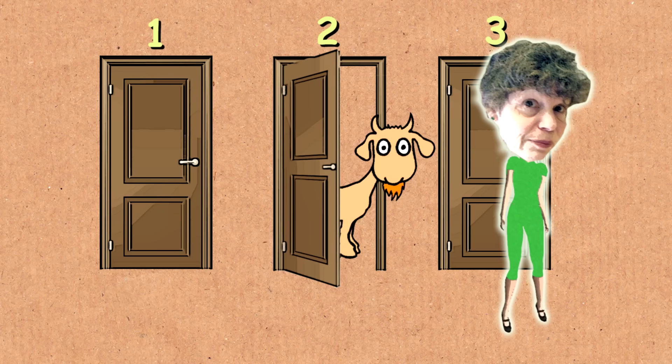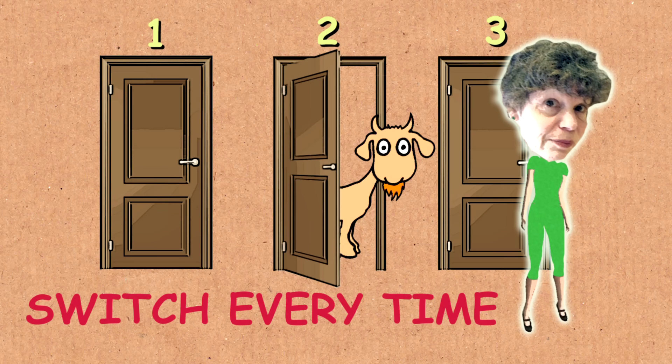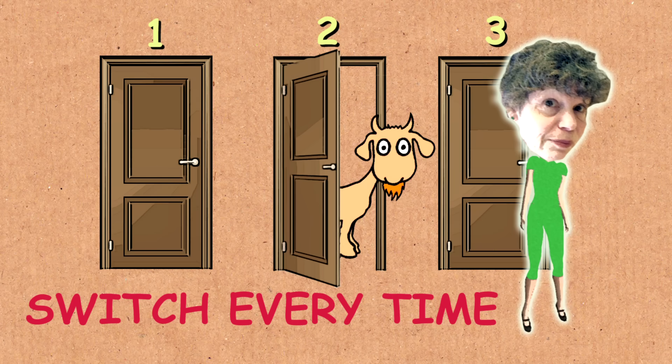A remarkable thing about this problem, simple as it is, is that it has sparked just endless debate. In the time of the show, I don't recall anybody ever saying there was a dedicated strategy that you should always follow. But in fact, there is a dedicated strategy you should follow. You should pick door number three. That's the answer. You should switch. You should switch every time. And that will do the best for you over the long run.